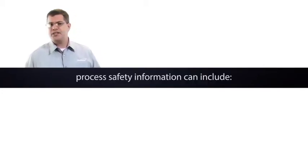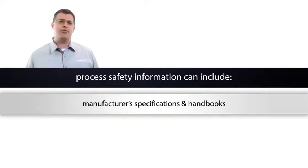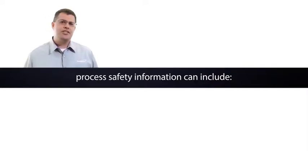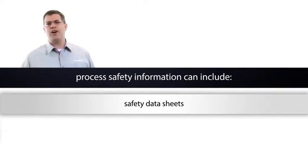Let's consider other forms and formats that process safety information can take. Process safety information can include manufacturer specifications and handbooks for the process equipment and technology. It can include training materials and safety data sheets for the chemicals being used in the process. Process safety information includes published and proprietary scientific data gathered on the process or its chemicals.